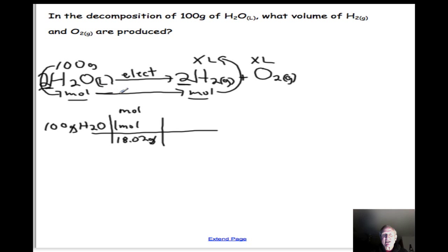Our next step is to go from moles of H2O to moles H2. In this particular case, that's pretty easy because the coefficients on H2O and H2 are exactly the same. We'll have our mole ratio of 2 mole H2 over 2 mole H2O. That will cancel.